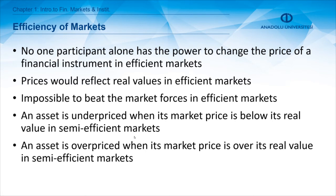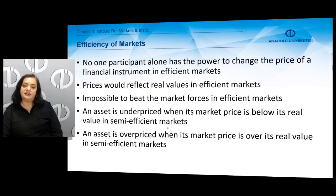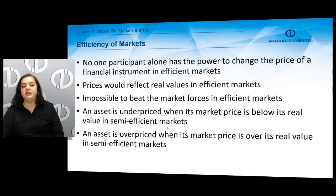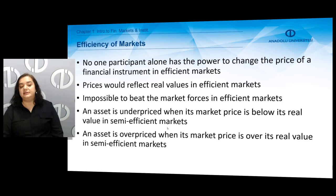Therefore, it's impossible to beat the market, as no single participant alone has the power to change the price and prices reflect real values. We say that an asset is underpriced when its market price is below its real value — we call this real value the intrinsic or economic value. An asset or financial instrument is overpriced when its market price is above its intrinsic or economic value.